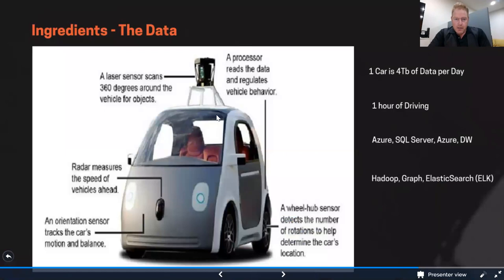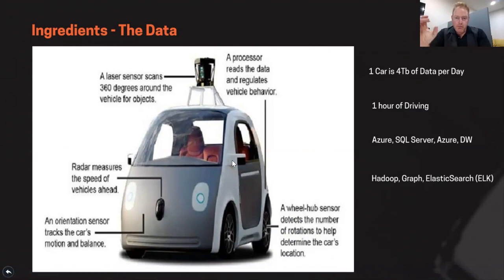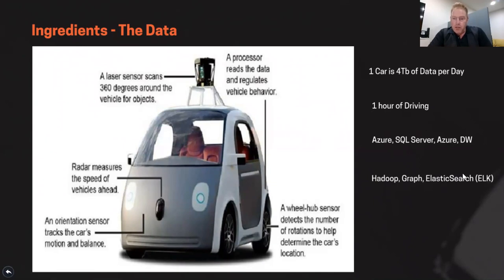Now we talk about how the data is actually produced. I'm not going to go into a great deal of detail about this today — in the session next month I expect this will be covered in a lot more detail. There are various components that actually produce data. We have a processor, laser sensors, radar, an orientation sensor — this is just an example of a few sensors. There's a wheel hub sensor, but the reality is there are hundreds of different sensors all working at the same time on the car, and each of those is producing data. One car is producing about four terabytes of data per day, and that's just with about an hour of driving.